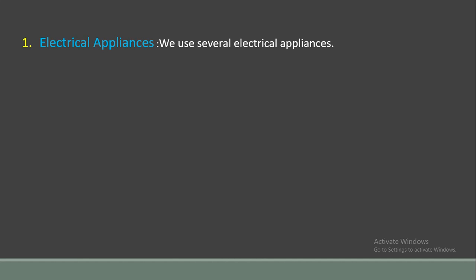Number one is Electrical Appliances. We use several electrical appliances, just like electric fan, juicer, washing machine. Yeh sari ki sari chizain electrical appliances hain, jo ke physics ki branch mein aati hain.